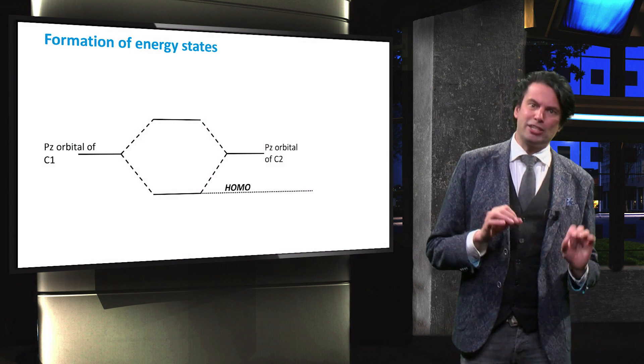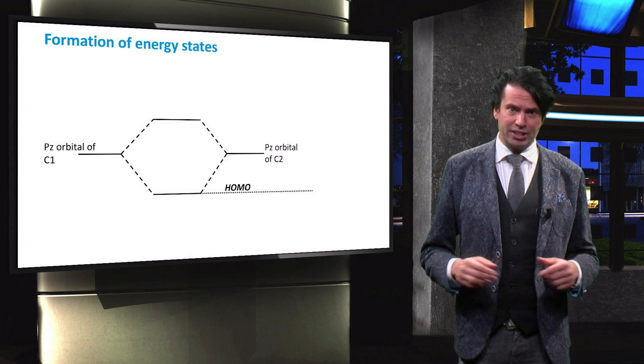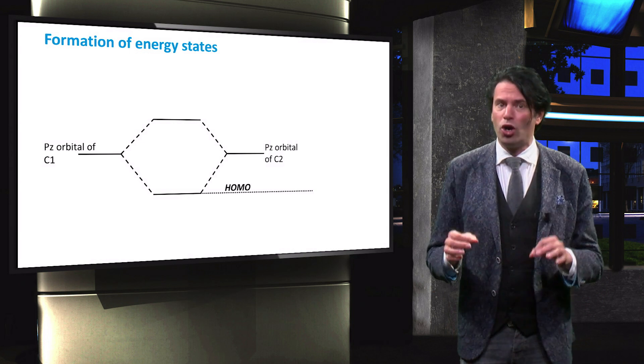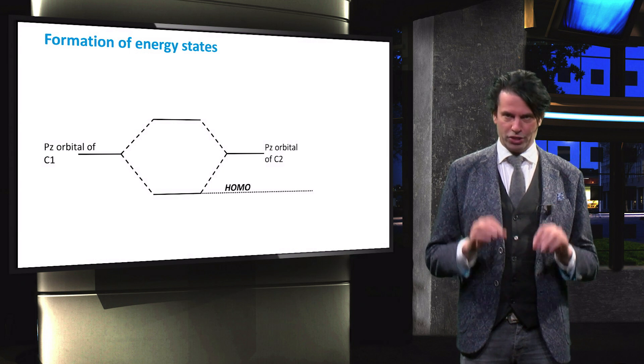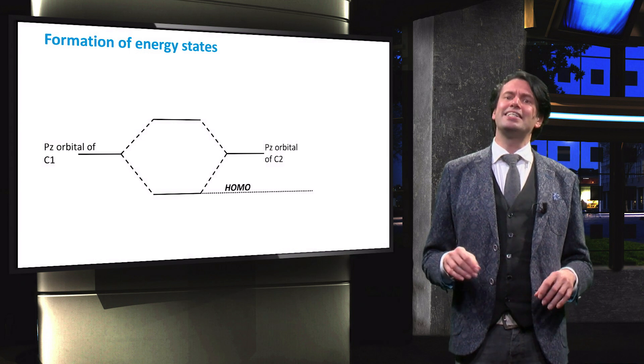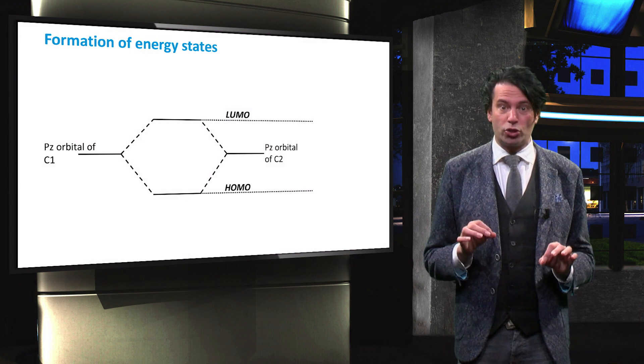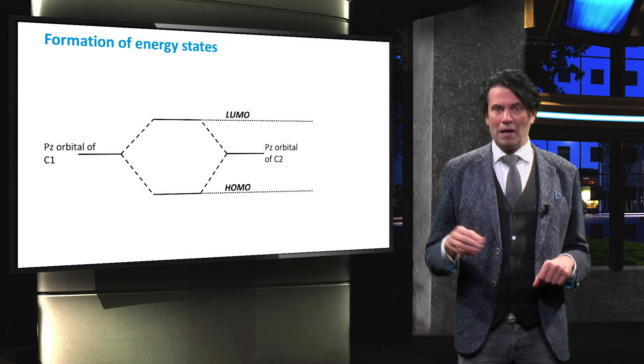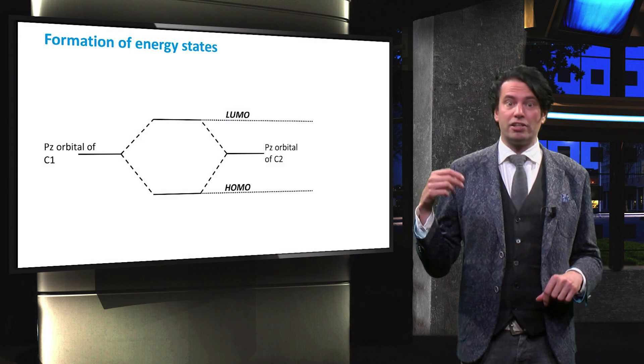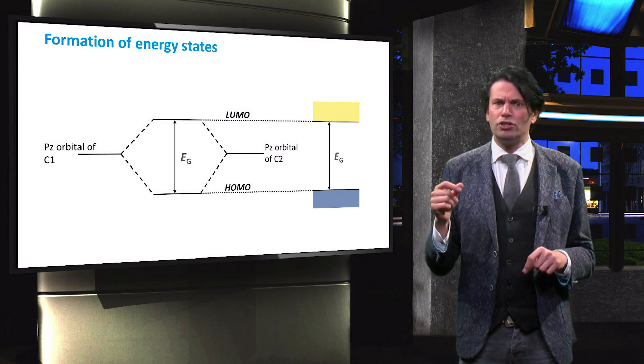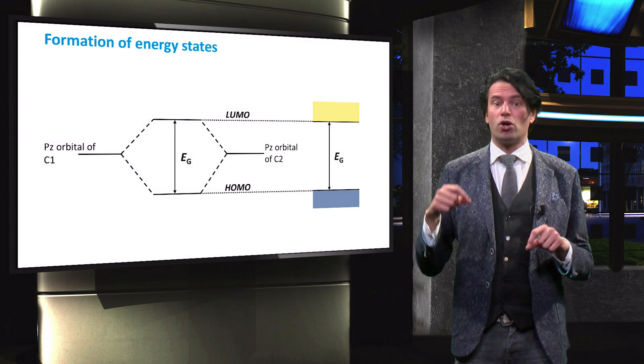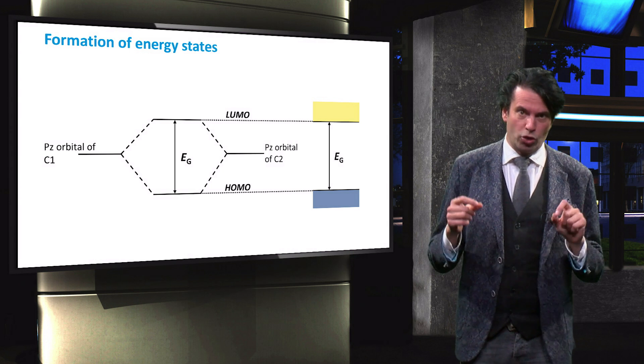The lower energy state is preferred by electrons and is occupied under normal room temperature conditions. This energy state is called the highest occupied molecular orbital or HOMO. The higher energy state, which is relatively unoccupied, is called the lowest unoccupied molecular orbital or LUMO.